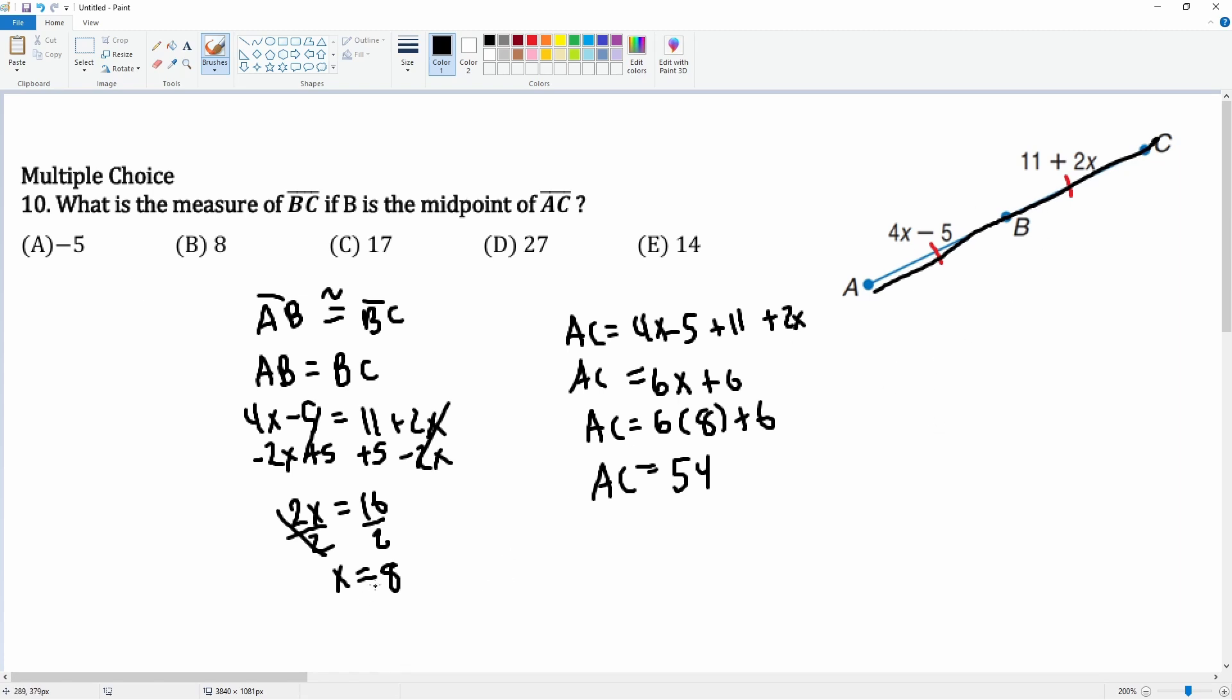What is AC? 4x plus 2x, that's 6x. That's correct. 6 times 8 is 48 plus 6, that's 54. None of the answers are here. Something's wrong.